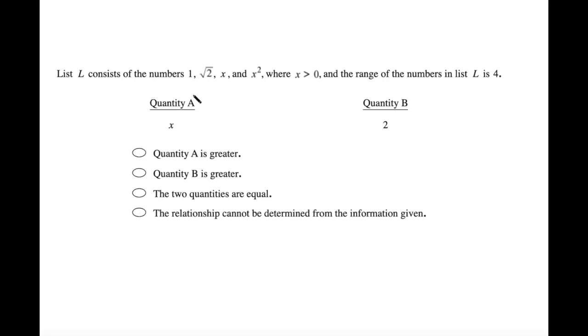List L consists of the numbers 1, square root of 2, x, and x squared, where x is greater than 0, and the range of the numbers in the list is 4. So we want to know what's greater, quantity A, quantity B.